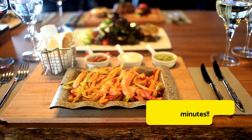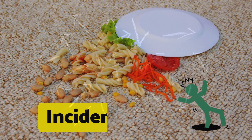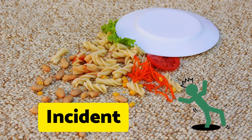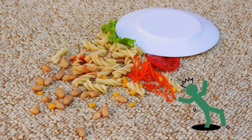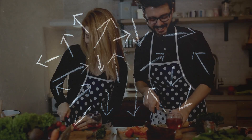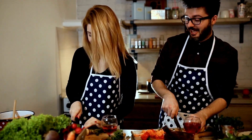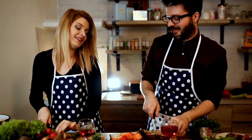The gap between the committed SLA and the target SLO is called an error budget. Think of it this way: because of some reasons or an incident, you miss preparing the food in 10 minutes, but you still have another 10 minutes to prepare and deliver it. This error budget is the buffer between SLO and SLA, giving you room to fix any errors while still maintaining your SLA.